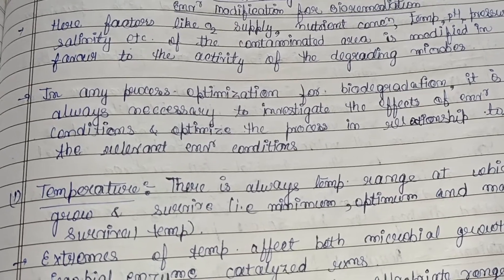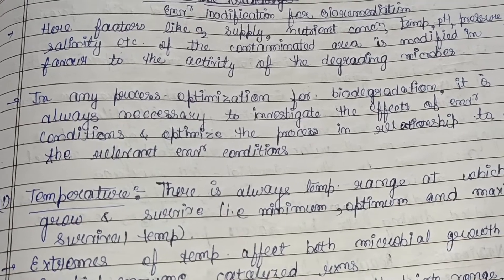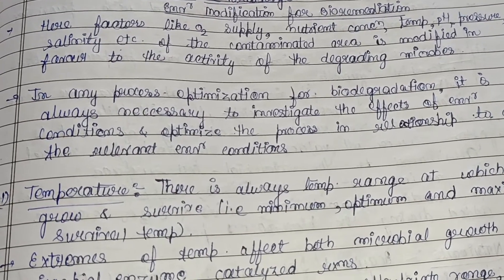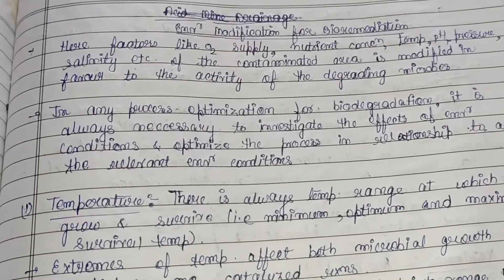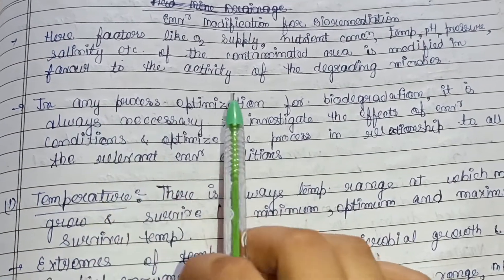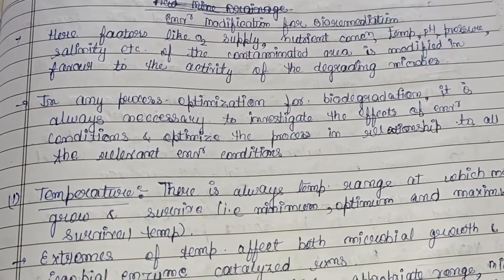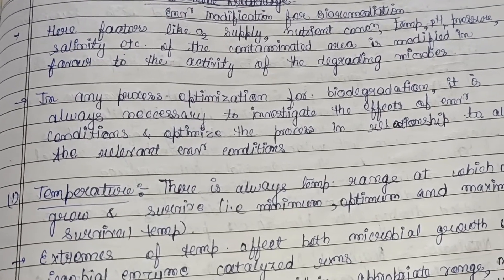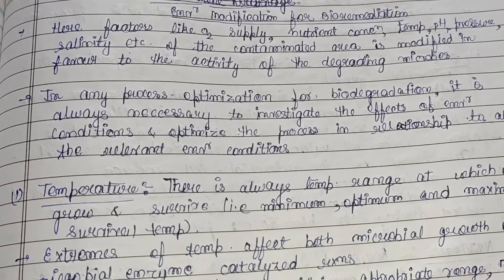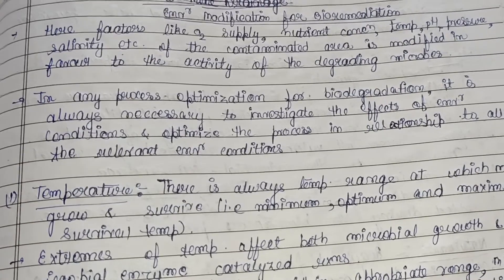Here, factors like oxygen supply, nutrient concentration, temperature, pH, pressure, and salinity of the contaminated area are modified in favor of the activity of the degrading microbes. The bioremediation process requires various microbes for the conversion of pollutants into less toxic forms.